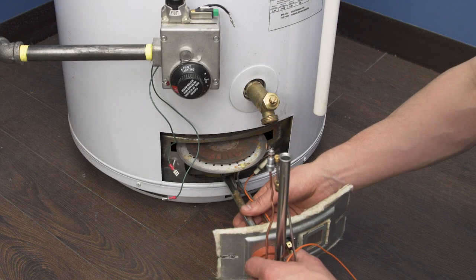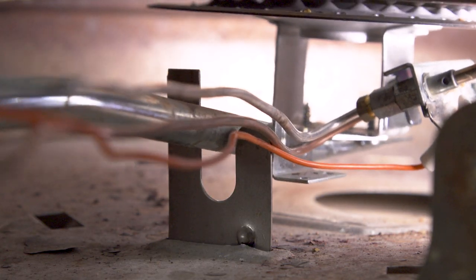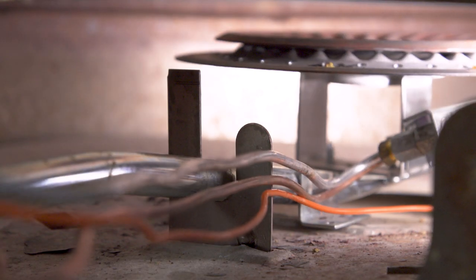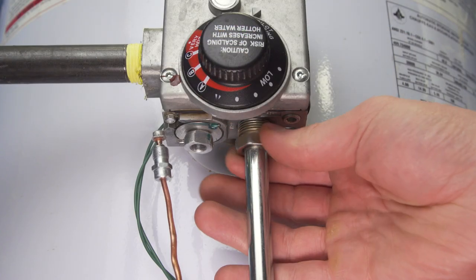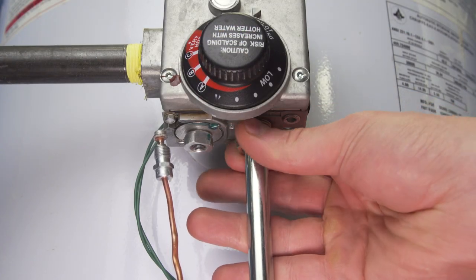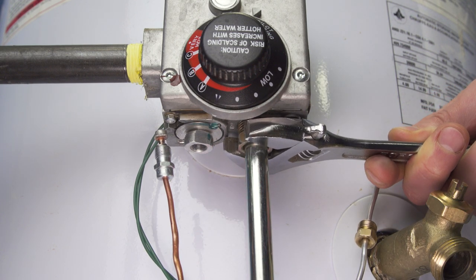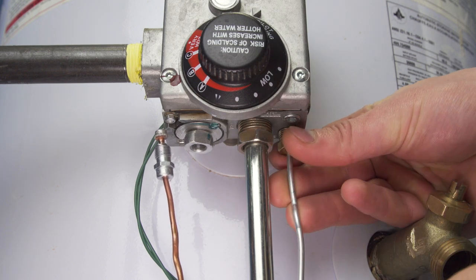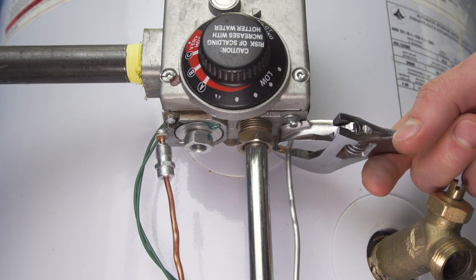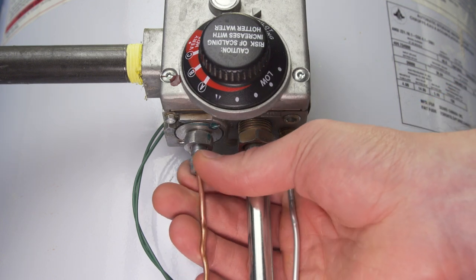Slide the burner assembly into the tank and align the tab into the bracket. Align the manifold tube into the control valve and tighten it with an adjustable wrench. Be careful not to over tighten the nut as the threads can easily strip. Now connect the pilot tube and tighten it into place. Now screw in the thermocouple.